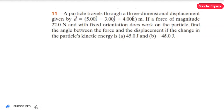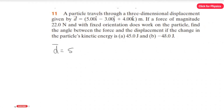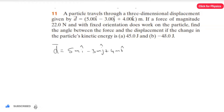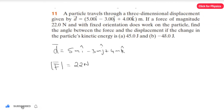We have to answer two questions: first, find the angle for the change in kinetic energy equal to positive 45 joules, and then find the angle for the change in kinetic energy equal to minus 45 joules. The displacement vector is given by d vector equal to 5 meter i-cap minus 3 meter j-cap plus 4 meter k-cap, and the applied force magnitude is 22 newton.